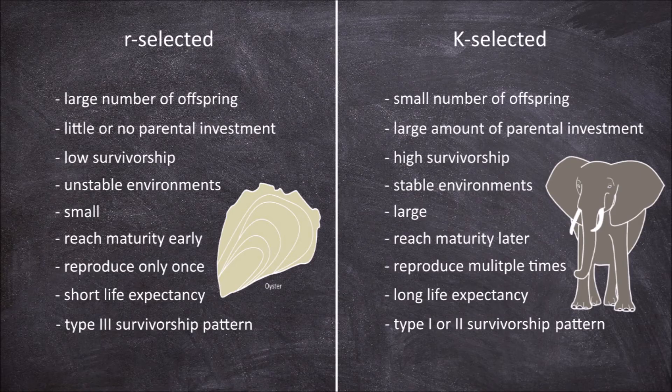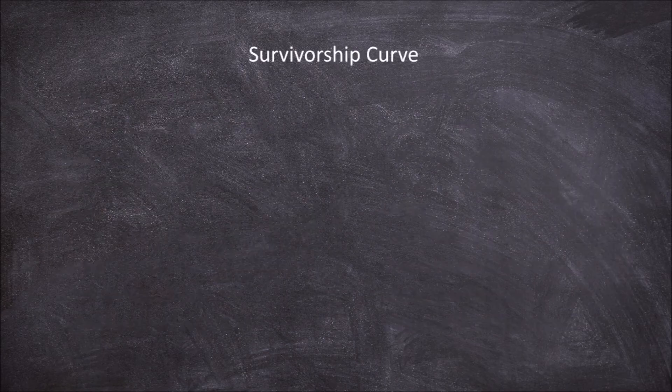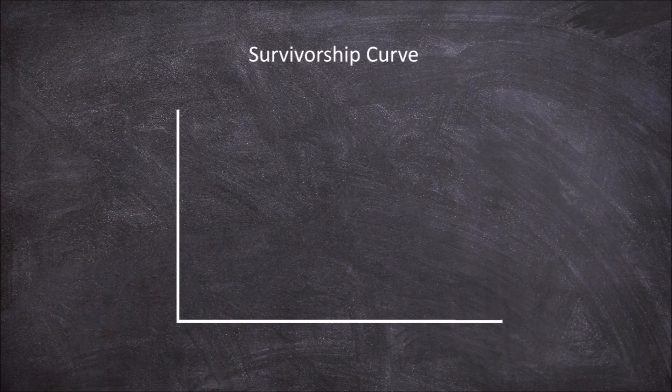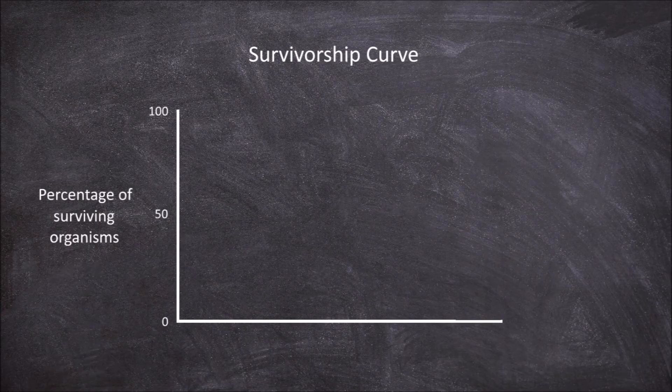These two strategies are the two extremes, and most species fall somewhere on a spectrum between the two. Survivorship curves are a useful tool to illustrate the differences in survivability for each strategy and those that fall somewhere between these strategies. In this graph we plot the percentage of surviving organisms on the y-axis against the percentage of their potential lifespan on the x-axis.